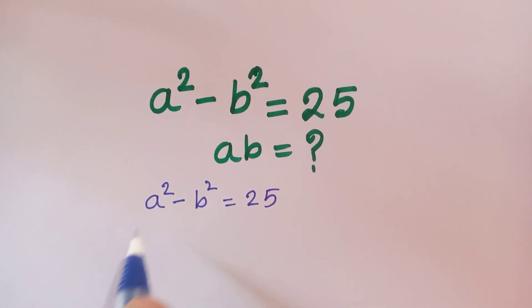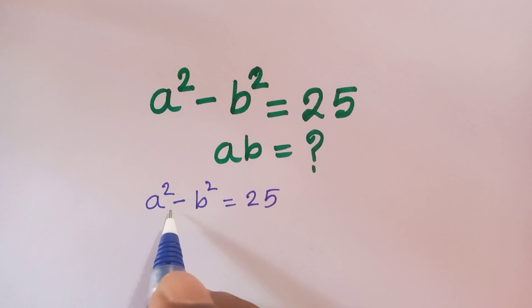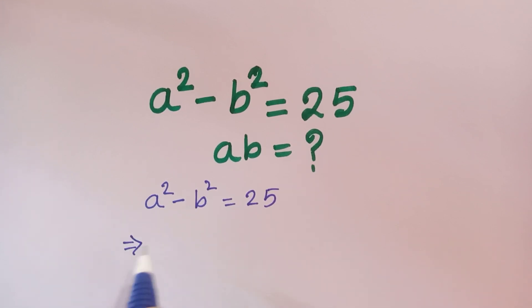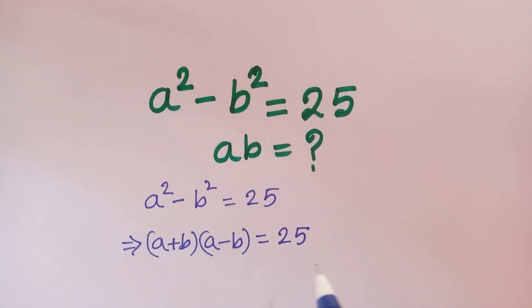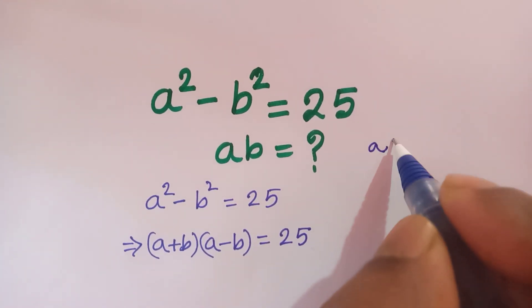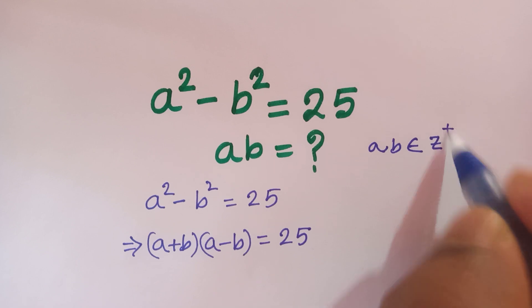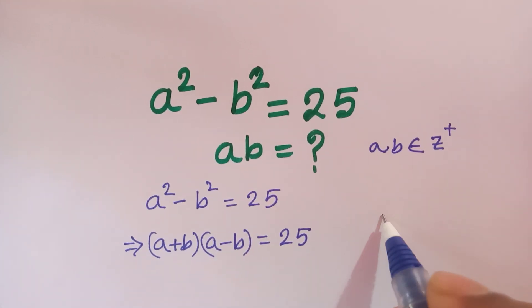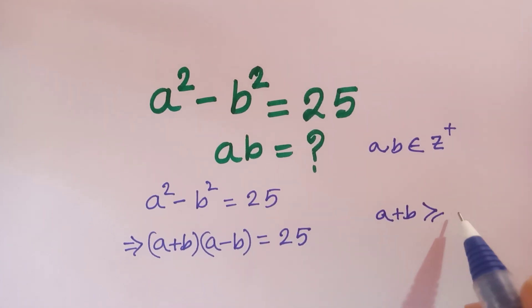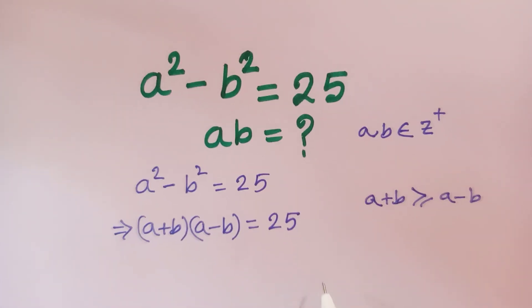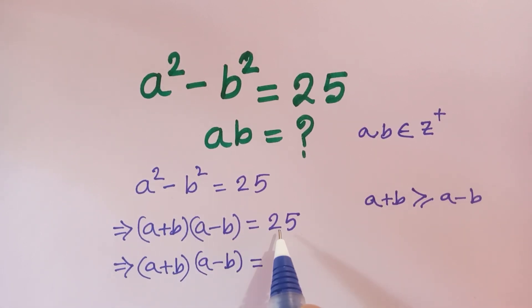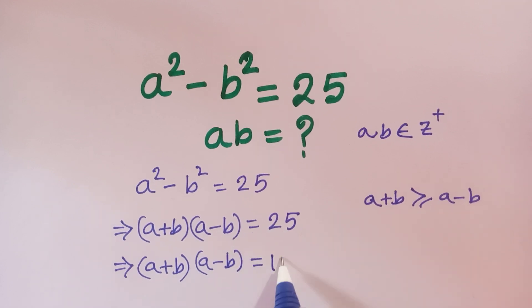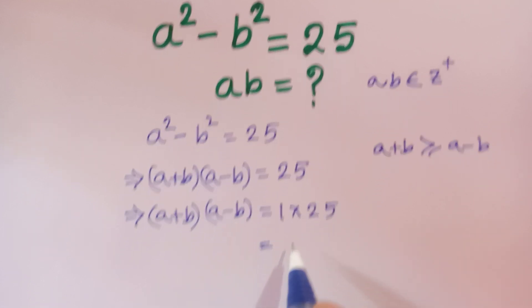Using the difference of squares formula, we can write a squared minus b squared as (a plus b) times (a minus b) is equal to 25. Here a and b are positive integers, and a plus b is greater than or equal to a minus b. So (a plus b) times (a minus b) equals 25, which can be written as 1 times 25 or 25 times 1.